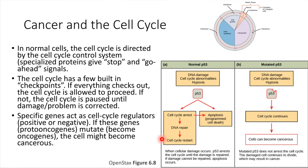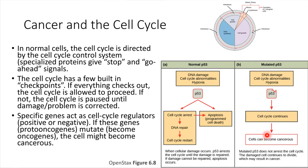If the DNA can't be repaired, p53 would actually facilitate what's called programmed cell death — this would be the end of the cell, and it would not be allowed to divide anymore. But if there's damage to p53 itself, then things can't be regulated normally anymore. So if there's damage to the DNA, the cell doesn't have any way of recognizing that, and the cell would continue to divide and potentially become cancerous.